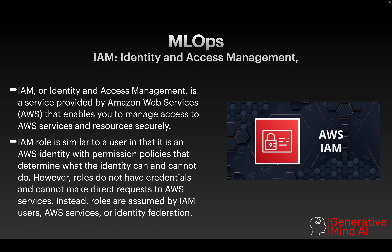An IAM role is similar to a user in that it is an AWS identity with permission policies that determine what the identity can and cannot do. Everything about what resources an IAM user can access is set up by the root user. The root user has the power to grant access — it might give admin access or restrict access to only specific services like S3. IAM roles do not have credentials and cannot make direct requests; you need to go through the root user to get access to a specific service.